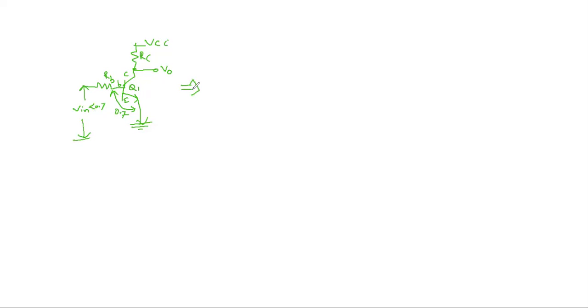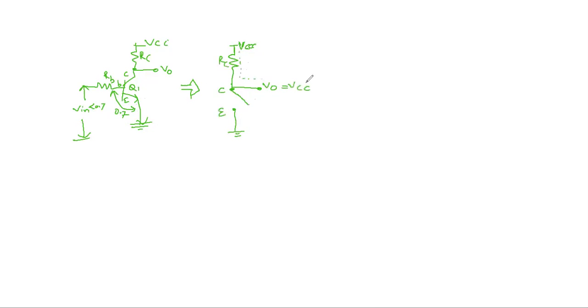The equivalent circuit will be like this. The collector terminal and the emitter terminal are grounded, and we collect the output across the collector terminal. When the input is less than 0.7V, the Q1 base-emitter will not allow the transistor to turn ON, so the collector and emitter terminals will be open. Then the total output voltage will be VCC. That means when input is low or 0 — V_input less than 0.7V — transistor Q1 is OFF, collector and emitter terminals are open, and output voltage equals VCC.